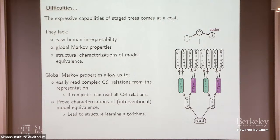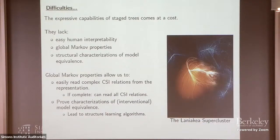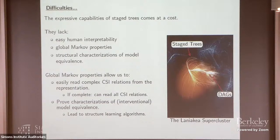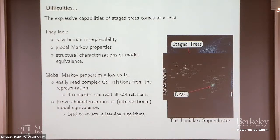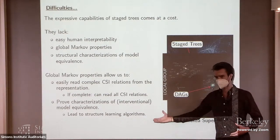So where are we at? We've defined a very general family of models. In the universe of all statistical models, we can think of stage trees as being a super cluster, and the DAGs as being a galaxy within. The question we really want to know is: what are the models bounded to DAGs by gravity? What are the models where we can prove the theorems that we like, that generalize what we know about DAGs?